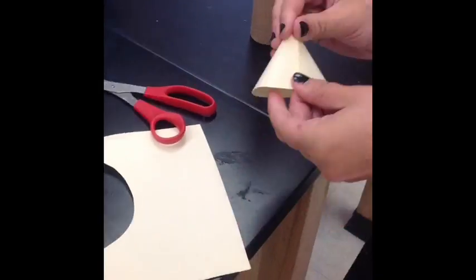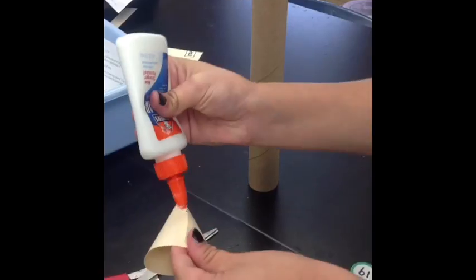First pinch your cone in to make the point. Then stick the cone into the tube and cut above the measurements. This will give you your cone.